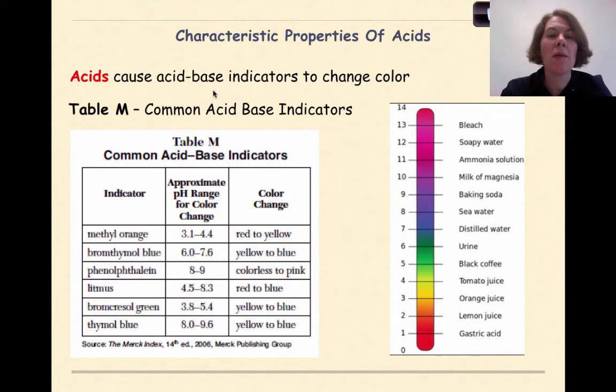Acids cause acid-base indicators to change colors. And we're going to talk about how to use Table M in more detail in the future. Table M describes common acid-base indicators in your reference table. So we'll see everything from methyl orange to phenolphthalein to bromocresol green and thymol blue. And each of these has a pH range, which again, we'll talk about in more detail. And then we'll see a color change. And what these color changes can tell us as we see over here is whether something is acidic or basic.